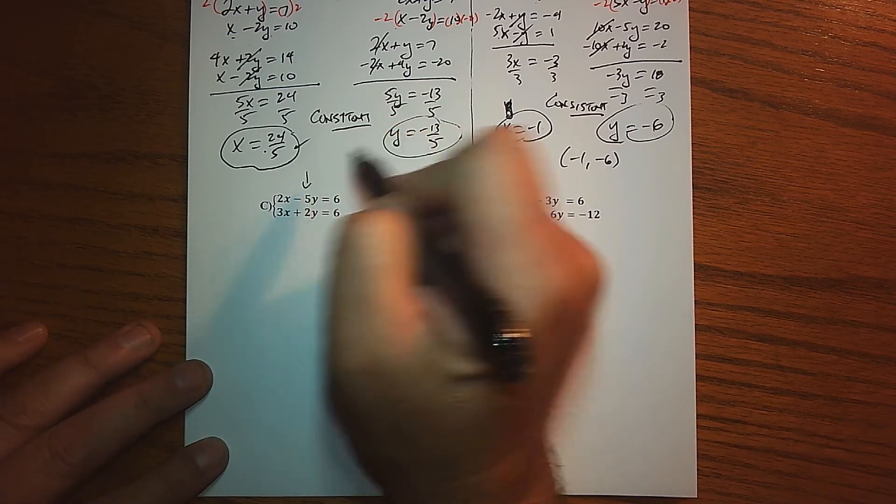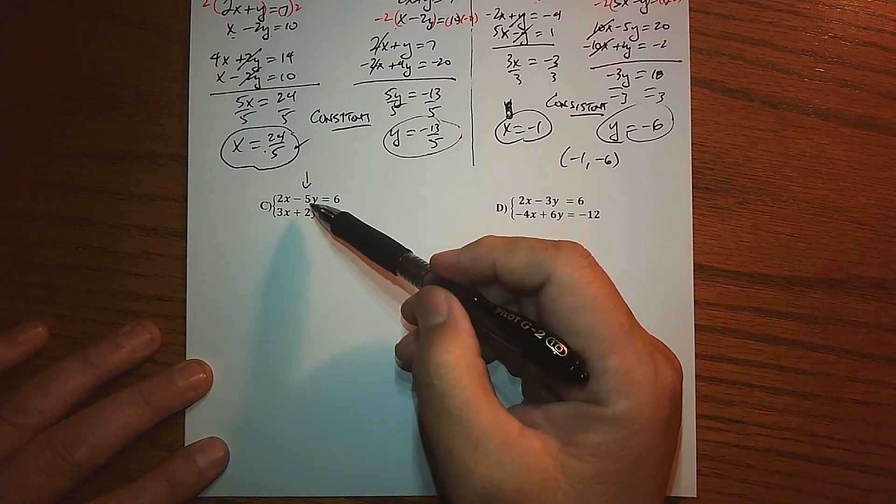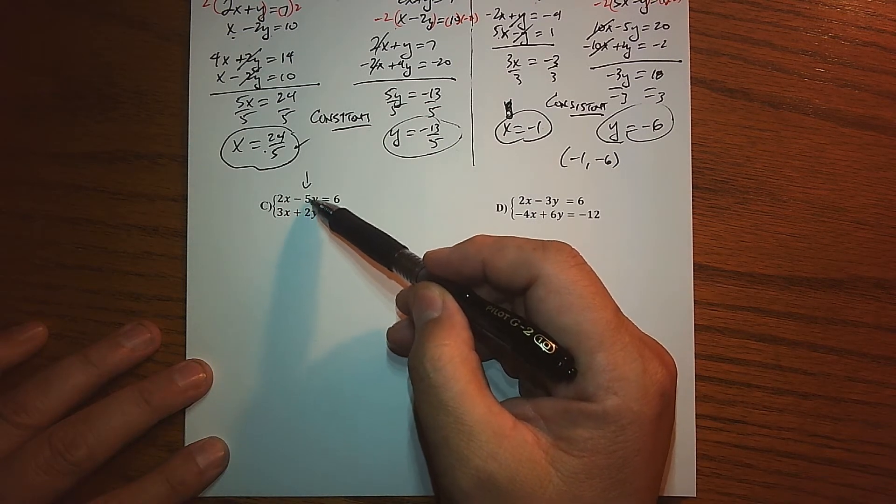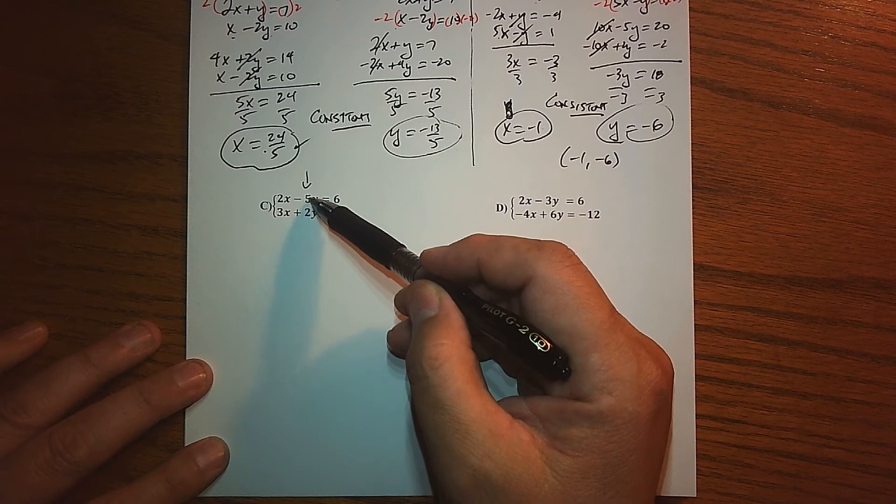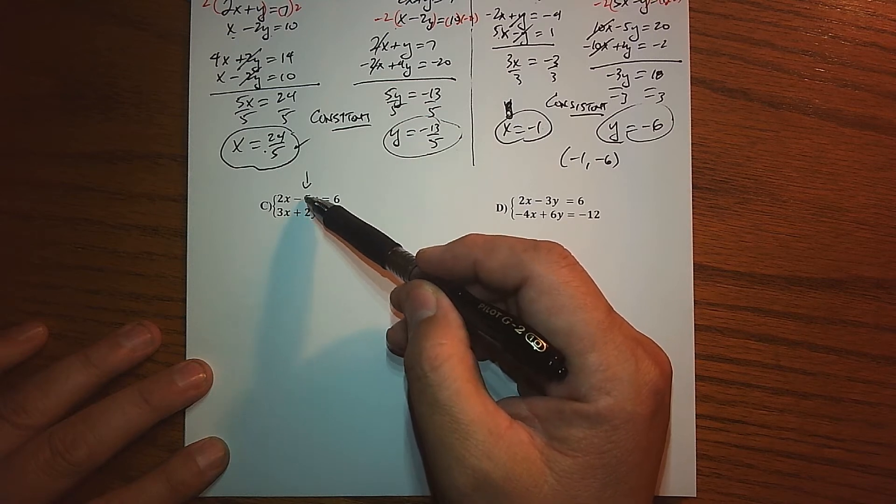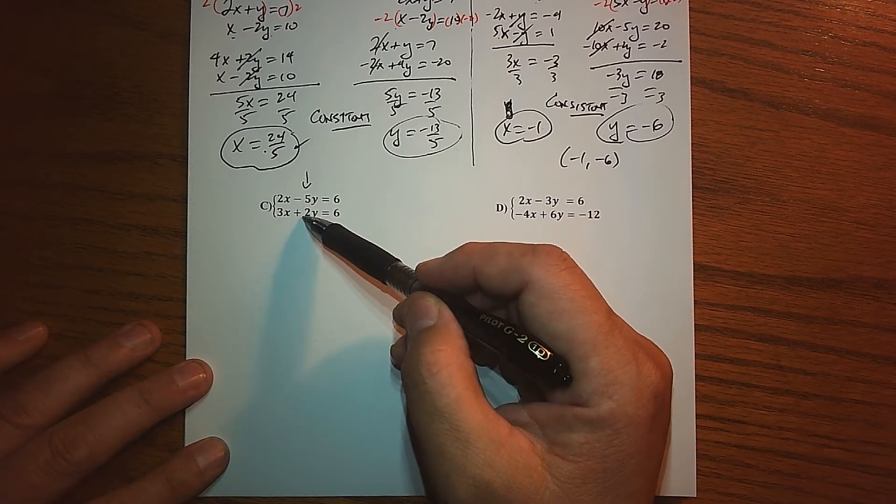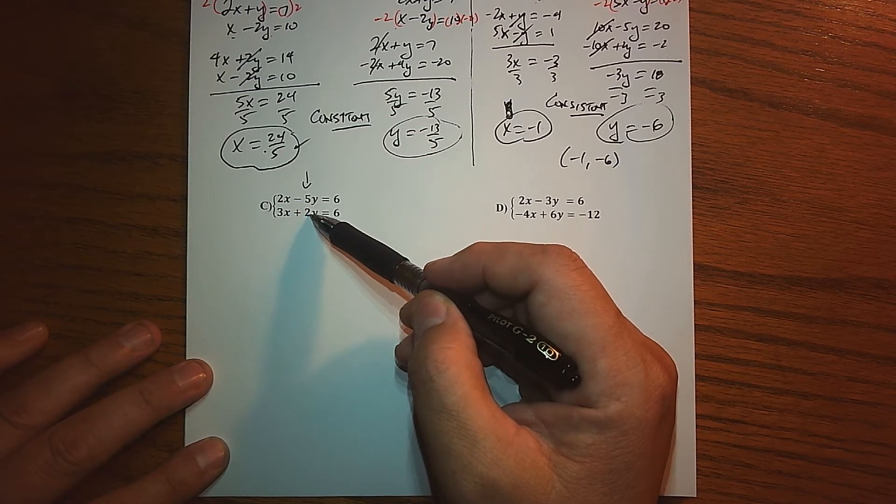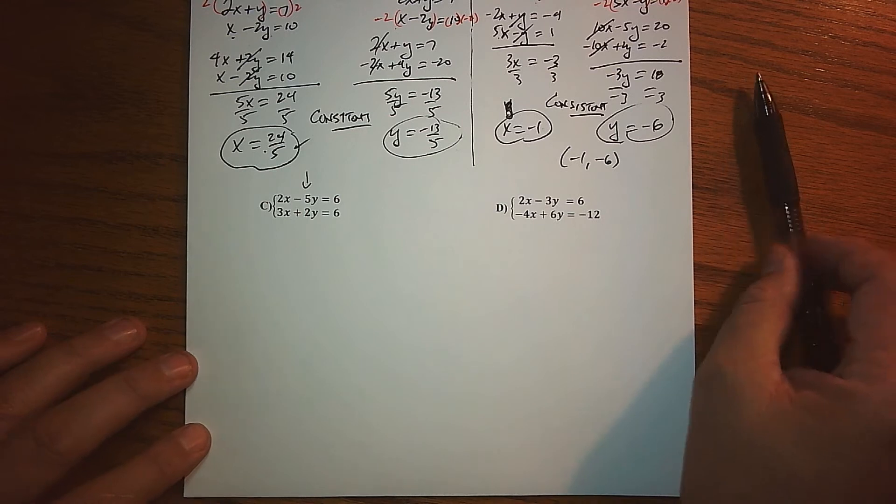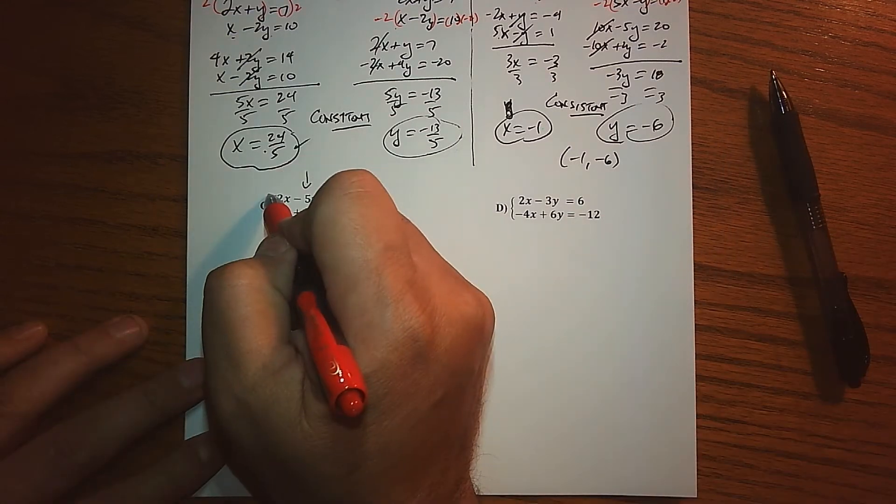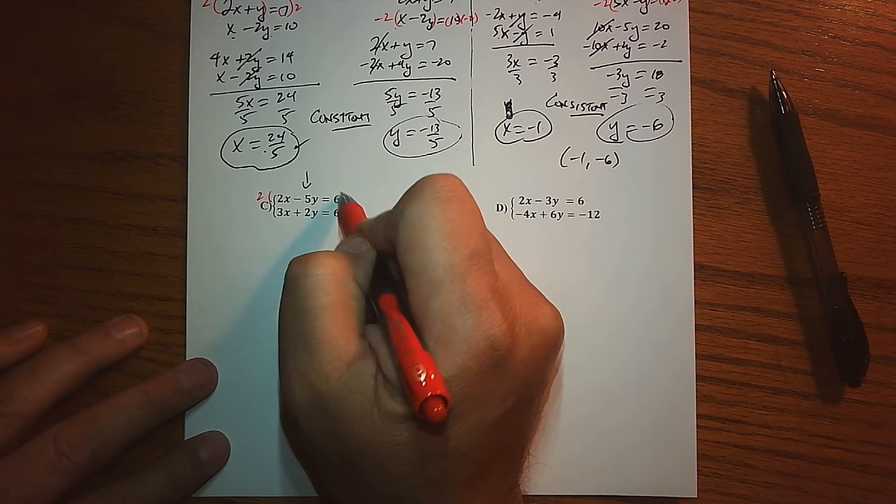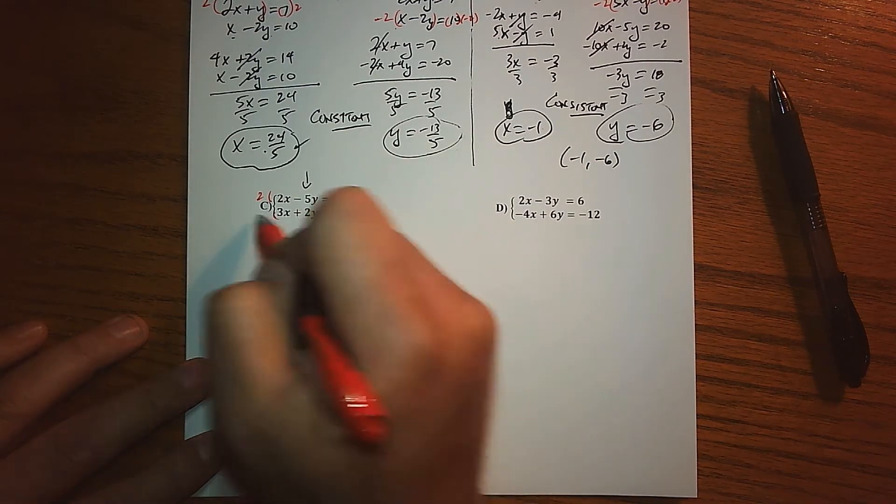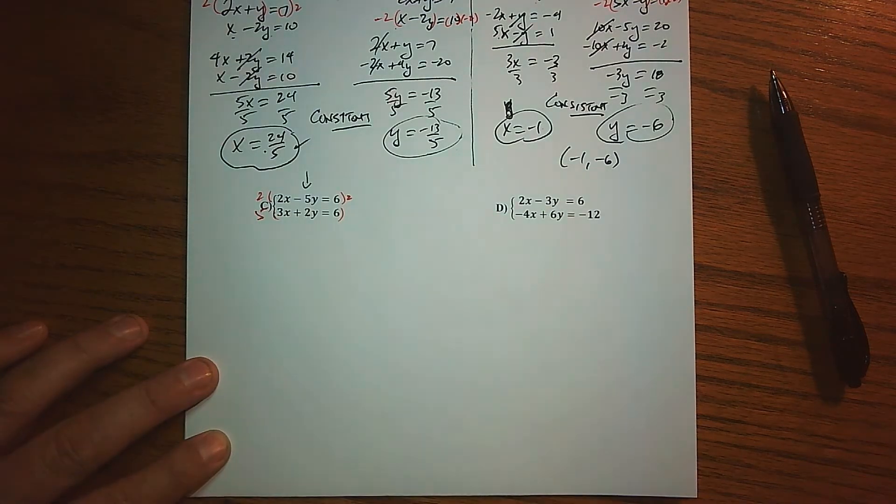How about we go ahead and eliminate Y. Now that I've decided that, I have to make sure that these two coefficients are opposites. The good news is the signs are opposites—we're subtracting or adding—but the bad news is we have a 5 and a 2, so they're not quite opposites.